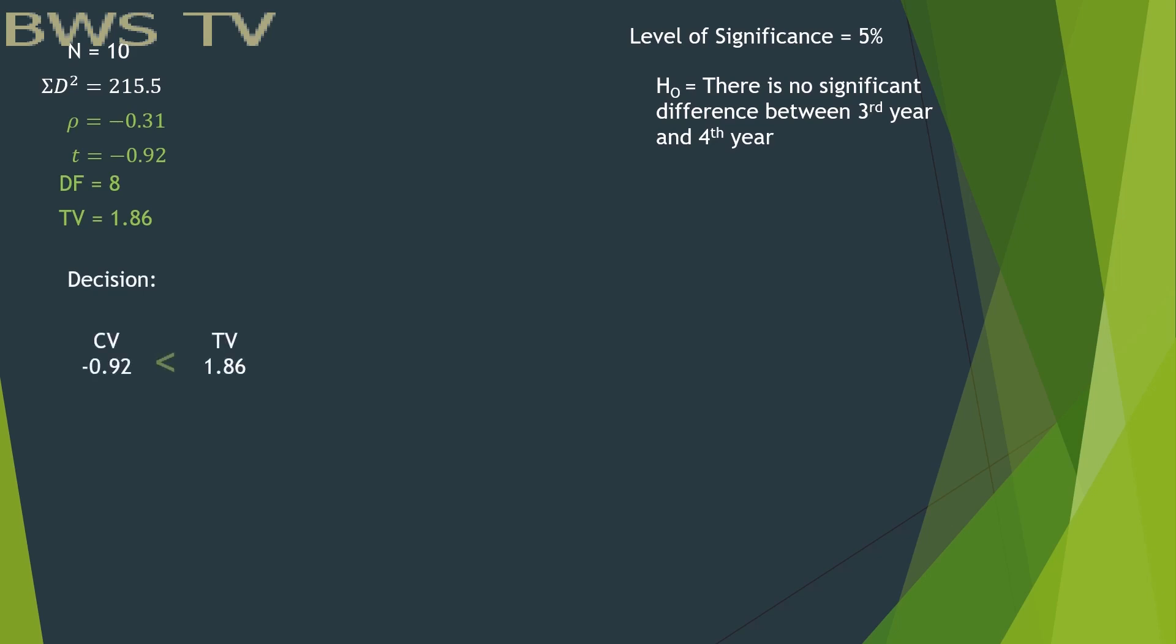In here, CV is lesser than t-value, meaning the null hypothesis is accepted. The H0 is accepted because the CV is lesser than t-value. There is no significant difference between 3rd year and 4th year.